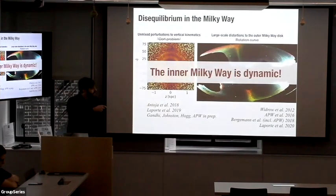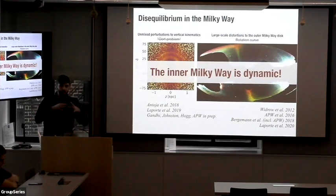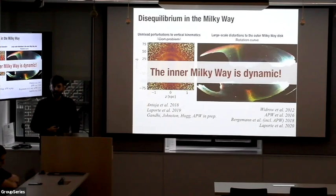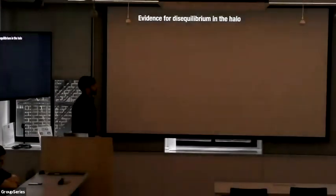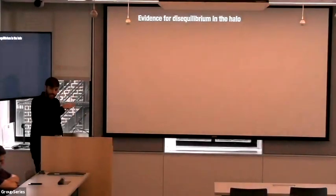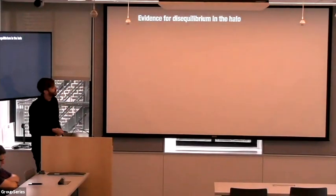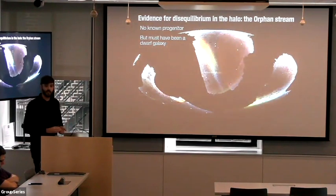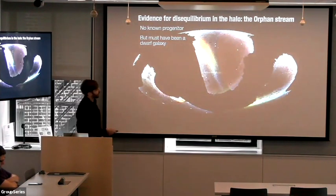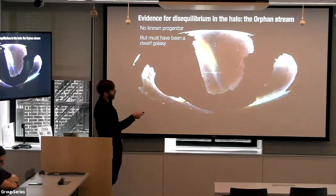So the inner Milky Way — where the disk is — is very dynamic, and that already suggests that the toy picture of a static, simple mass profile Milky Way is kind of out the window. That was all for the disk. What about in the halo? We also actually see pretty strong evidence for time dependence and disequilibrium far out into the Milky Way's halo.